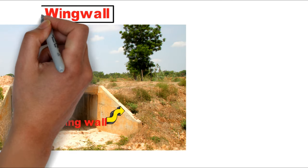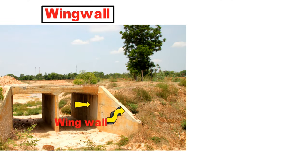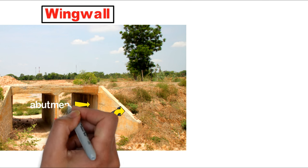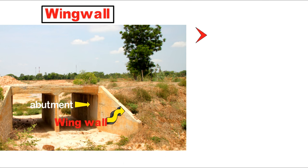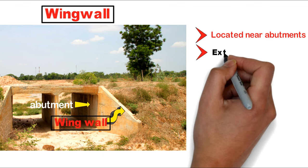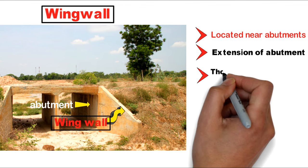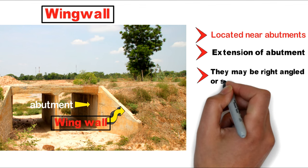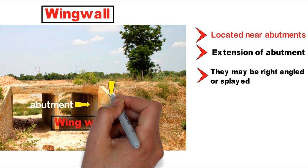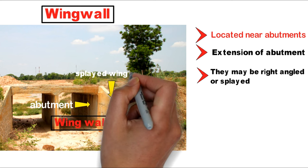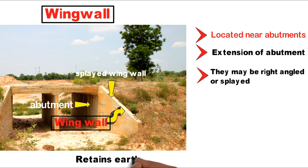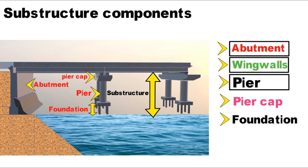Next is the wing wall. Wing walls are located near the abutments and are basically an extension of the abutments. Sometimes they may be right-angled to the abutment or splayed — a splayed wing wall is a slanting one. Wing walls retain earth in the approach area.